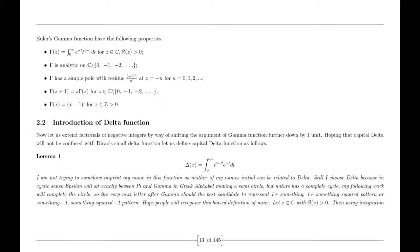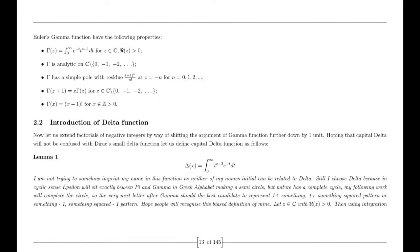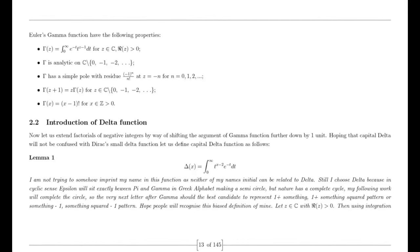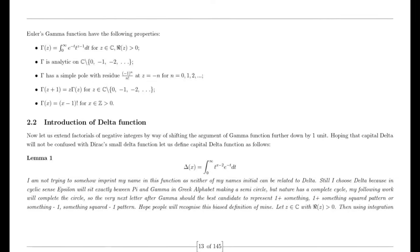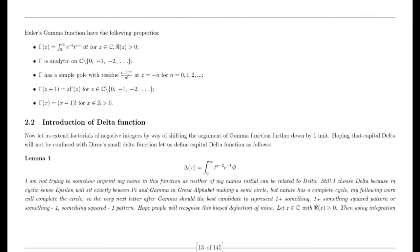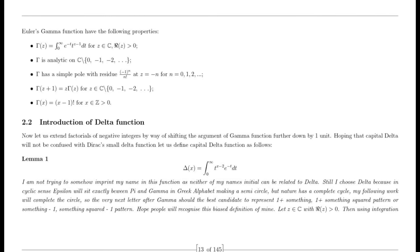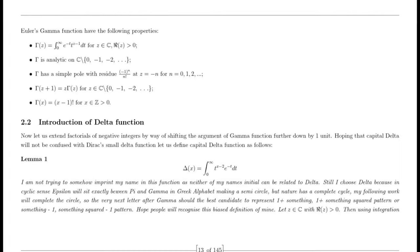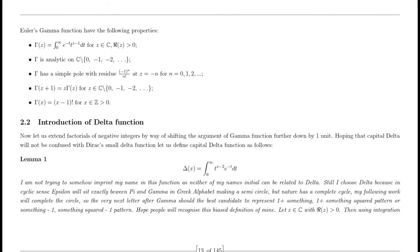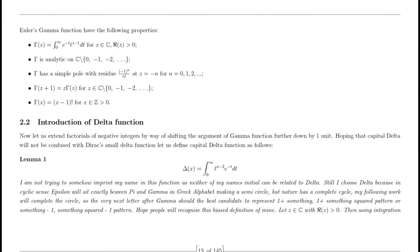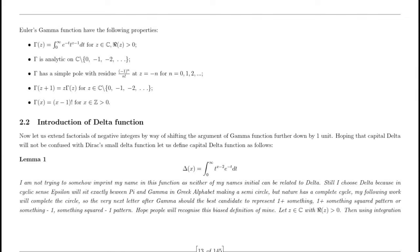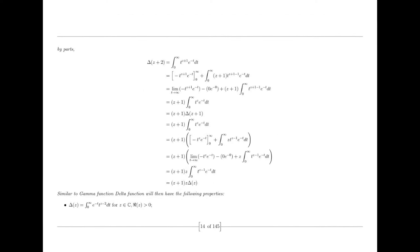I began by reading Wikipedia articles on physics, a subject that had always interested me despite my limited knowledge from school. It was during this exploration that I encountered a pie chart illustrating the composition of the universe: 69% dark energy, 26% dark matter, and 5% normal matter. This distribution didn't sit well with me. I had a sense that something fundamental must be missing.